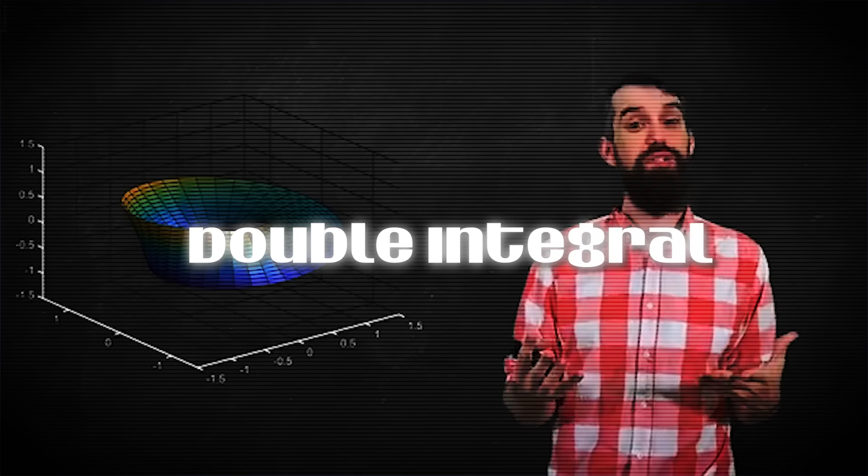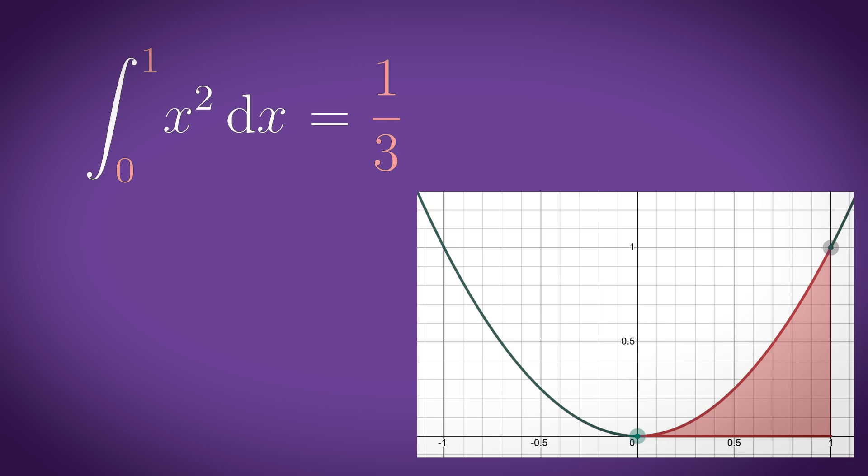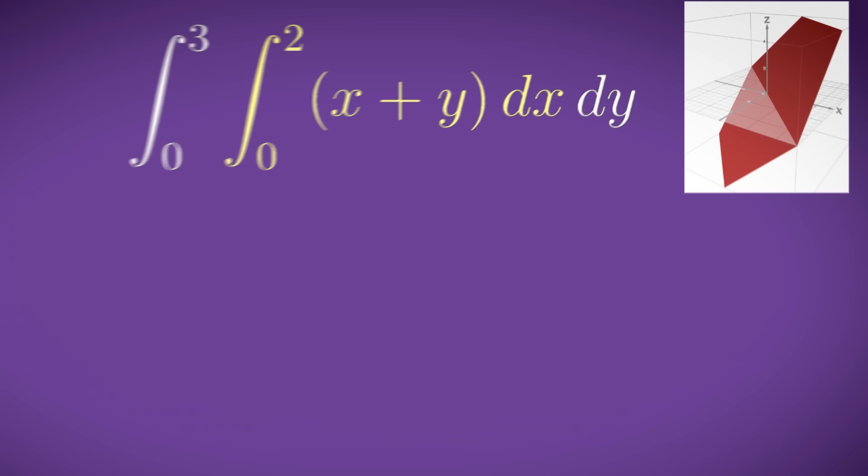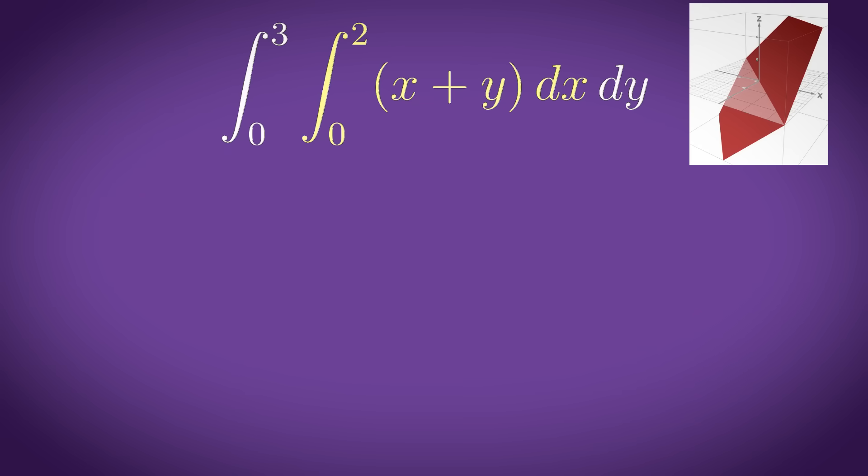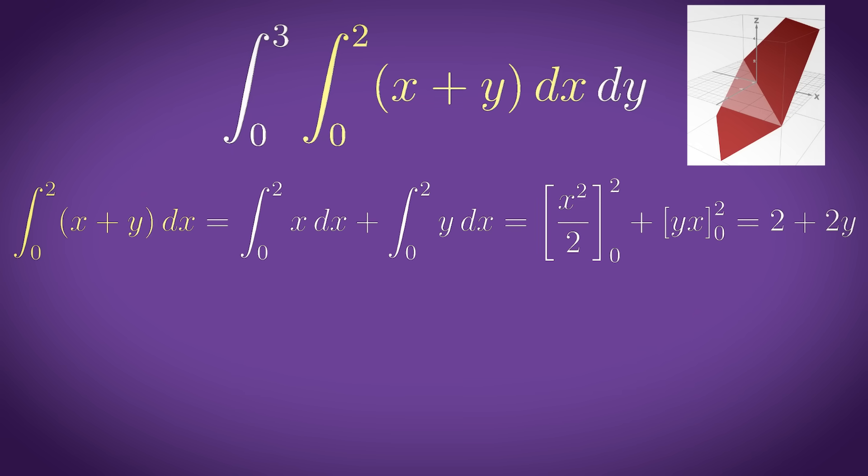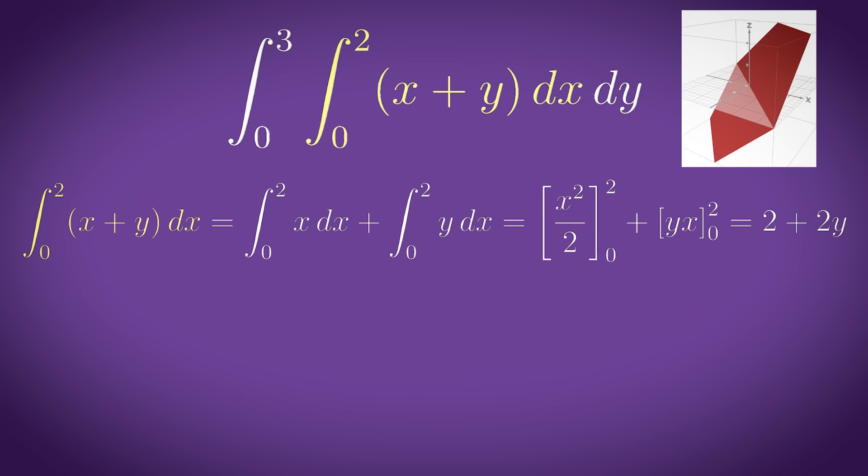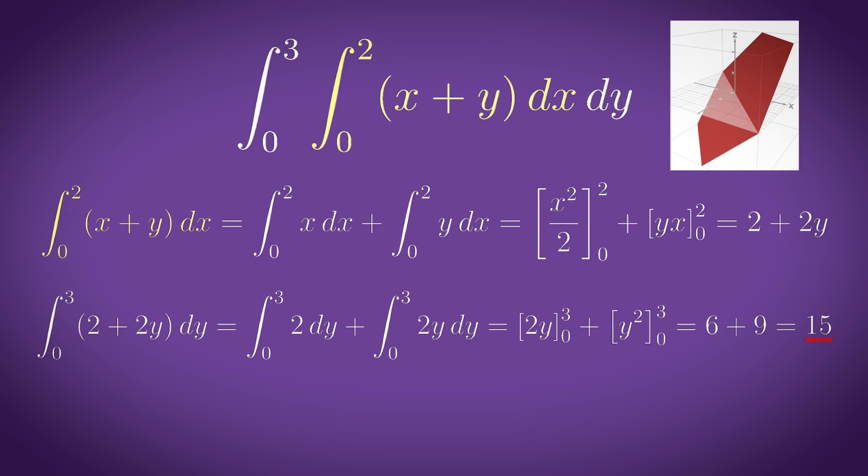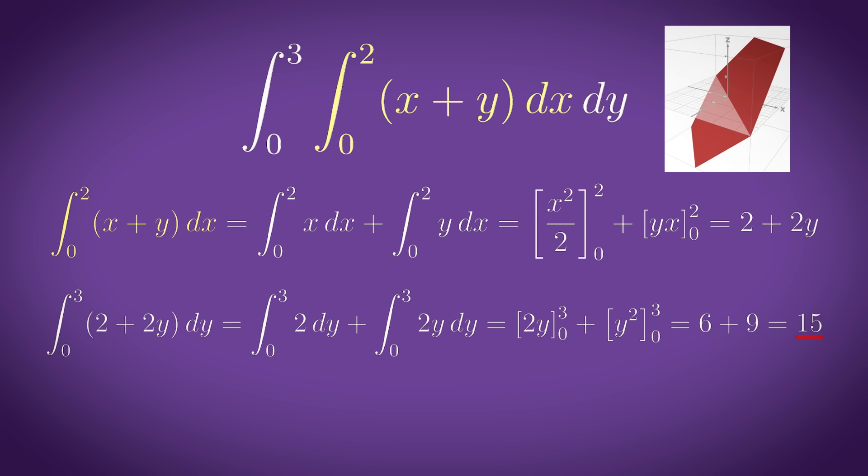4. Double integral. Instead of just finding areas under curves we can use the double integral to find volumes under surfaces. As the name suggests you do this by simply integrating twice. So for this surface we first integrate with respect to x meaning everything else is treated as a constant and then we integrate with respect to y and the result is the volume under this surface.